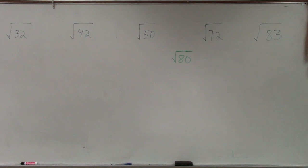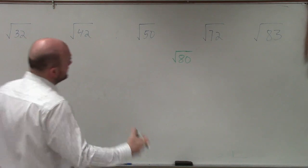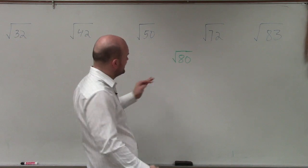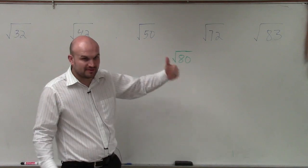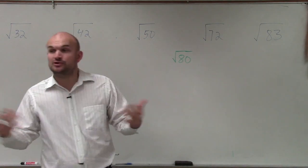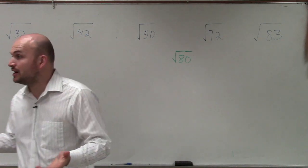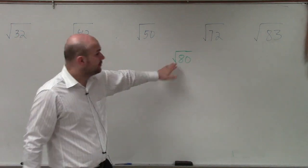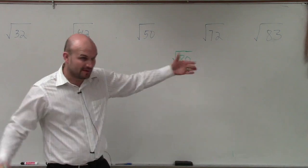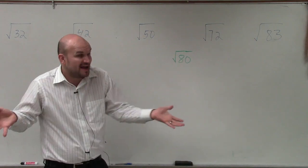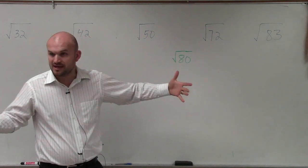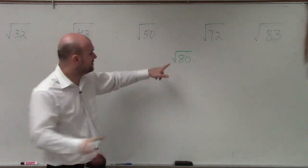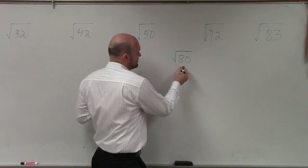So basically, if you want to simplify a radical, there are a couple different ways we can do this. One way is prime factorization, which means we factor the number. Factoring is writing a number as a product, so we can prime factorize this.